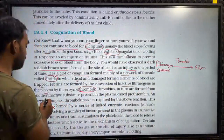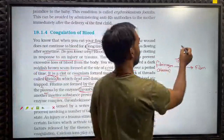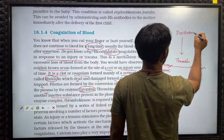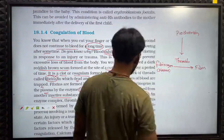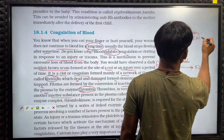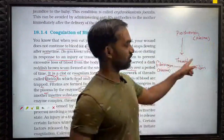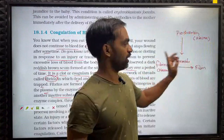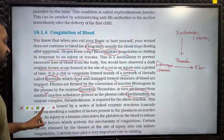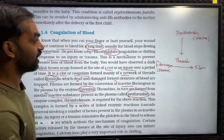Thrombin in turn is formed from another inactive substance present in the plasma called prothrombin. So plasma contains prothrombin and fibrinogen, both in an inactive state. Thrombin is an enzyme — don't forget. An enzyme complex, thrombokinase, is required for the above reaction.